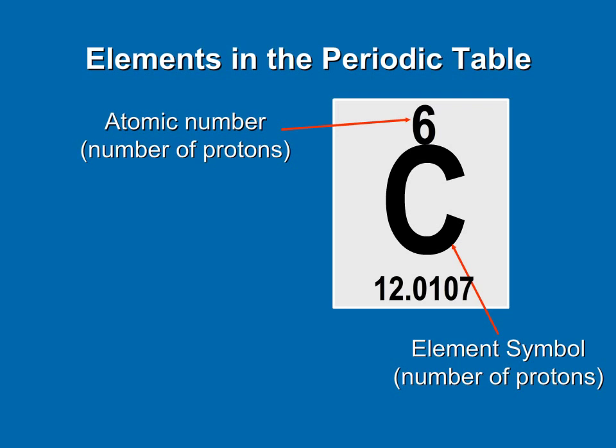Now, this is very important. The proton number defines the element. If an atom has six protons, it must be carbon. If an atom is a carbon atom, it must have six protons. If the atomic number changes, we have a different element.